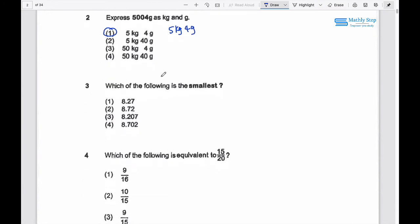Question 3: Which of the following is the smallest? So 8.2, this is not. This is not. 0.7, so this is smallest.